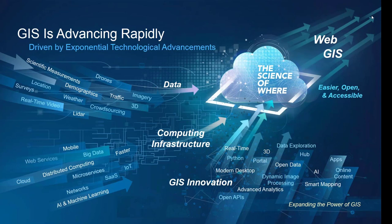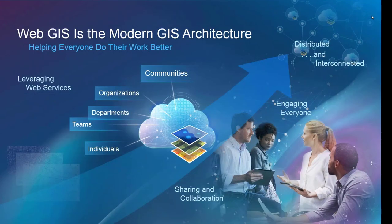You use web services every day on your mobile phone and desktop. For example, if you're looking at maps, imagery, and routes on your phone, those are map, image, and route web services. We mash these services together to make web maps and apps. This pattern has been emerging for half a dozen years and is the new generation of GIS, based on a concept of sharing and collaboration — sharing information and leveraging the technologies of web services to distribute, interconnect our knowledge, and engage everyone.